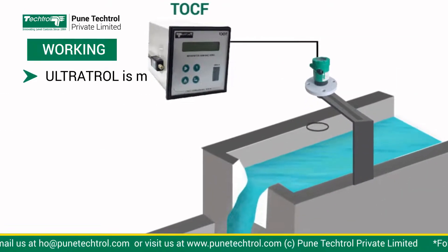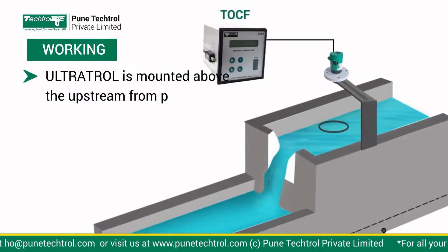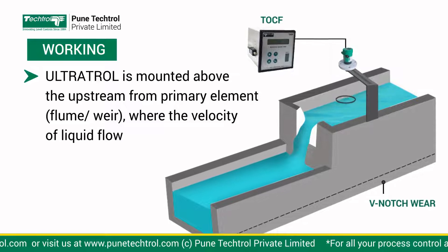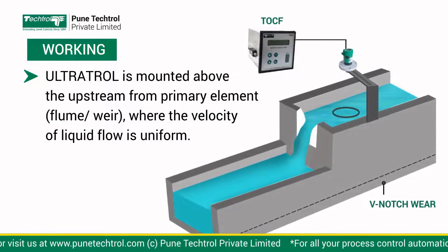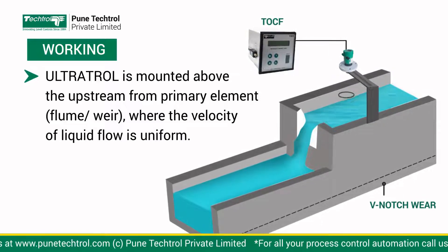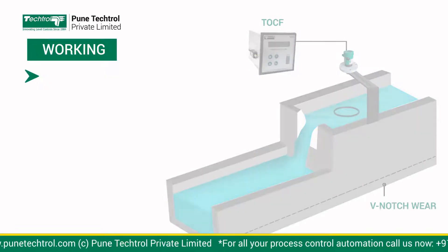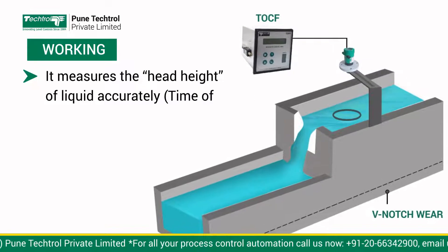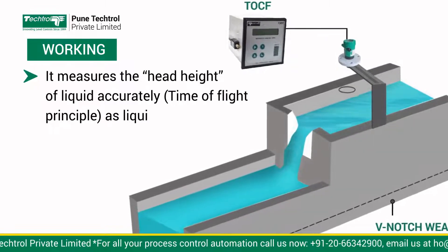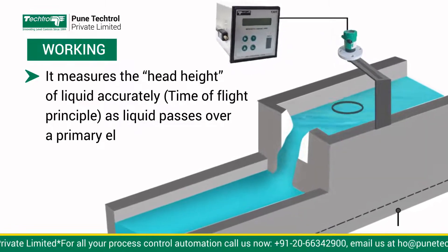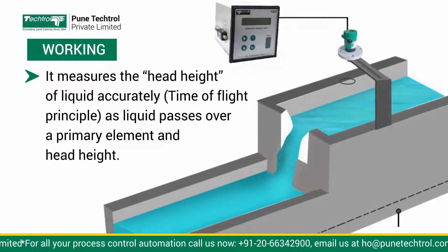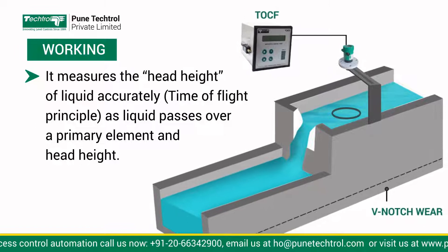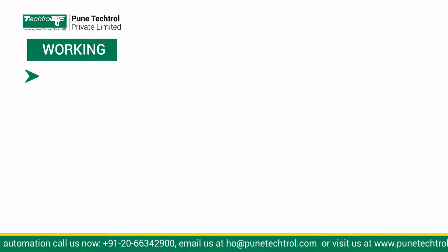Ultratrol is mounted above and upstream from the primary element where the velocity of liquid flow is uniform. It measures the head height of liquid accurately as liquid passes over a primary element. The output of Ultratrol is connected to the flow meter, which has a built-in formula to calculate flow corresponding to the chosen primary element and head height.